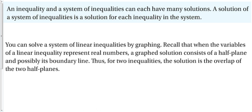An inequality in a system of inequalities can have many solutions. A solution of a system of inequalities is also a solution for each inequality of the system, just like a system of equations where the point you found works for both equations. Recall that when the variables of a linear inequality represent real numbers, a graph solution consists of half a plane and possibly its boundary line — either solid or dotted depending on whether it's greater/less than or equal to. For two inequalities, the solution is the overlap of the two half-planes.